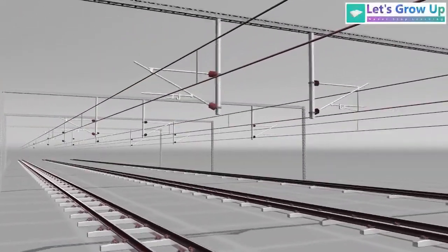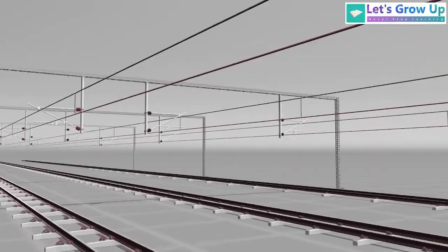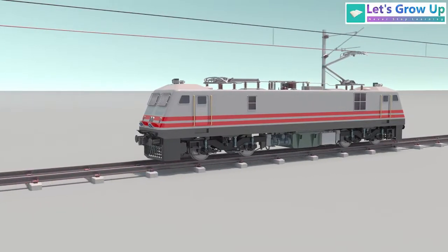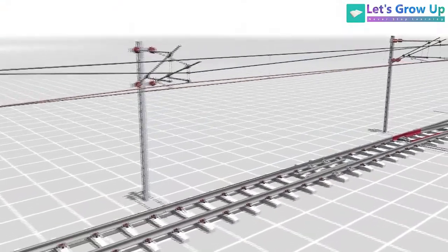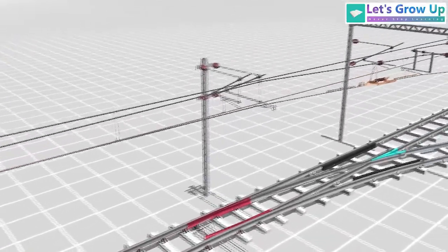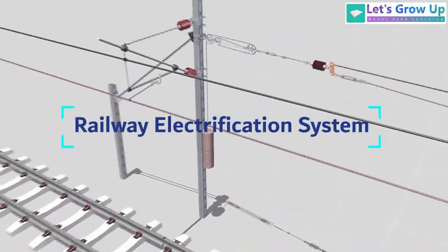Railway electrification using the catenary system simplifies train power supply. Overhead wires transmit electricity, replacing traditional fuel engines. In this video, we'll explore the fascinating world of the catenary system, the backbone of modern railway electrification.